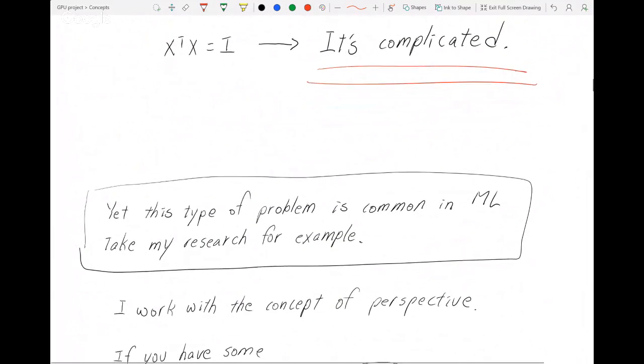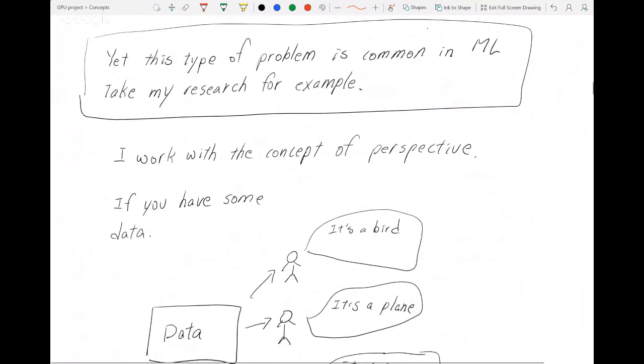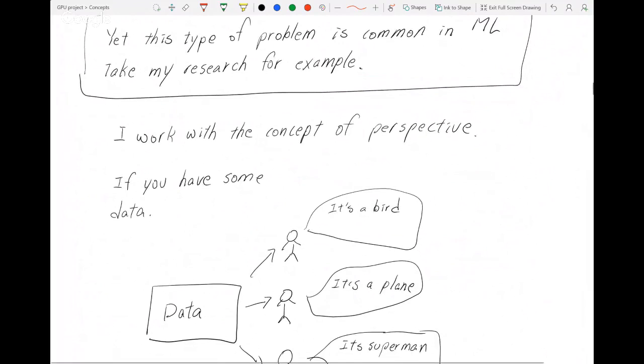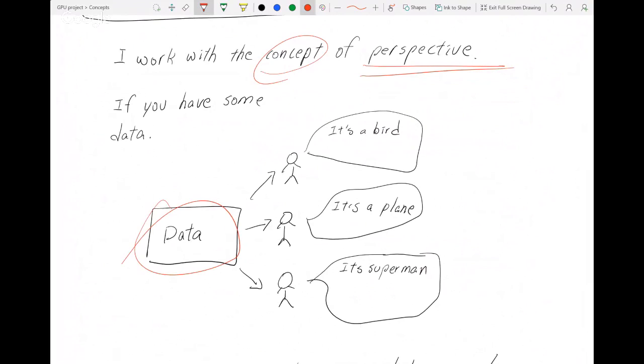This type of problem is pretty common in machine learning. I do research in machine learning, specifically on the concept of perception. I'll give you an example. If you have some data and ask somebody to give you a pattern they see, they might see some pattern. But if you ask another person, they'll give you a different pattern. A third person might give yet another pattern. This tells you that people may be looking at the same thing but see very different things. With data, that's also possible.